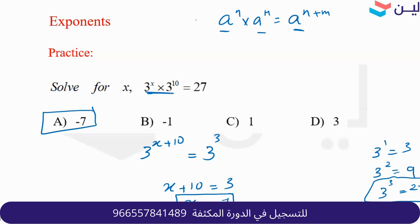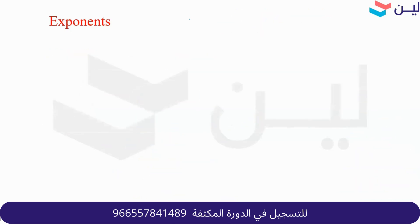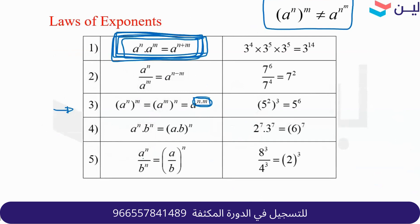A student asks about the fifth law. If we have different bases and a common exponent, we can take it as a common power. For example, 3 squared over 2 squared is the same as (3 over 2) all squared. That's it.